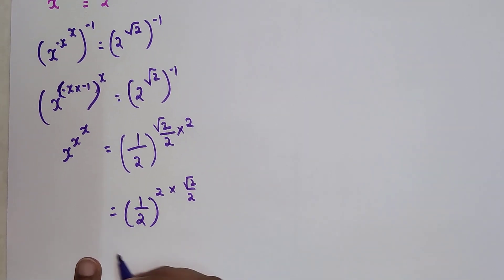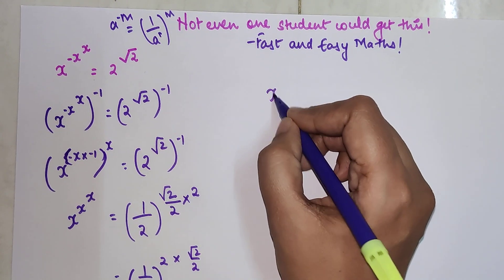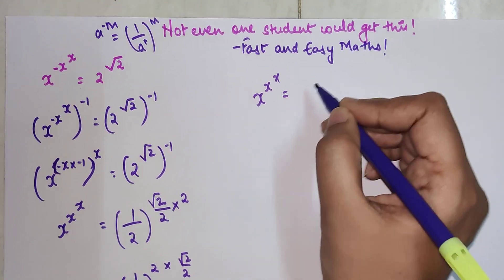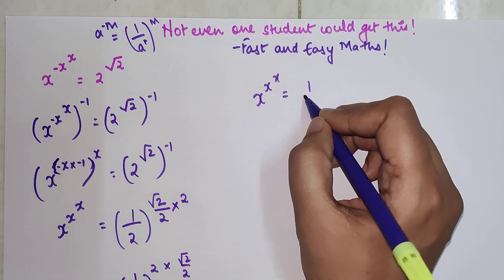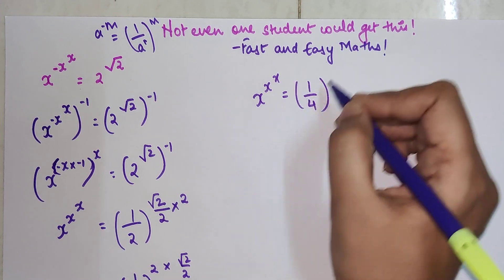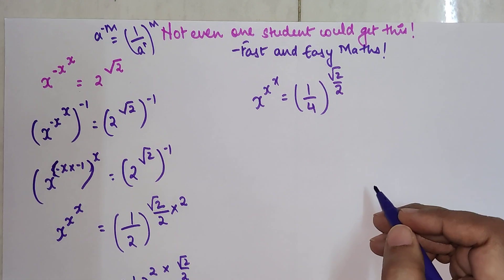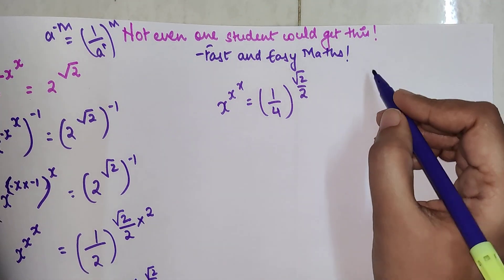So this now becomes x raised to x raised to x equals 1 upon 2 the whole square, which is 1 upon 4, the whole raised to root 2 upon 2. Now I want all of you to pay attention.